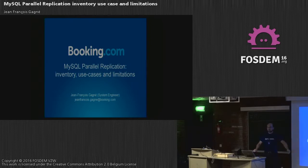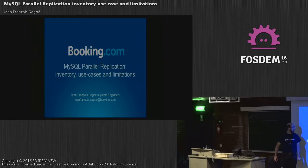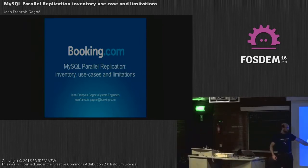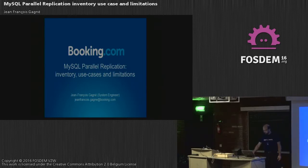My name is — I'm going to talk about parallel replication. I'm going to talk about MySQL 5.6, MariaDB 10.0, 10.1, and MySQL 5.7. We'll talk about the current landscape inventory. I'm going to talk about use cases at Booking, and also what you should expect and what not to do with those solutions.